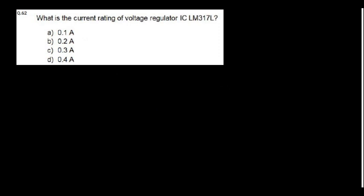What is the current rating of voltage regulator IC LM 78L series? It is 100 mA, i.e., 0.1 A.